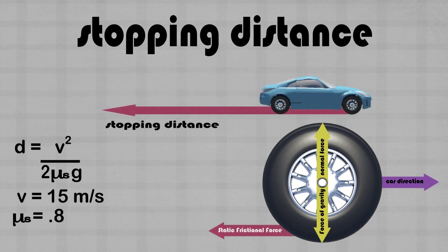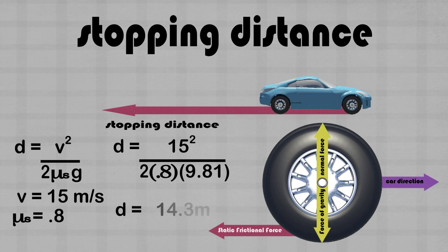Say that the car was traveling at 15 meters per second and we assume that the coefficient of friction between the road and the tires is 0.8. Plugging these values into the equation we're able to find that the stopping distance is 14.3 meters.